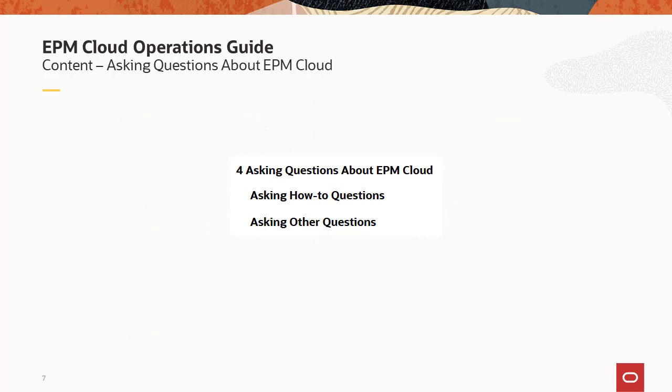The next content in the EPM Cloud Operations Guide is how to ask questions about EPM Cloud. There are two chapters: asking how-to questions and asking other questions. The first covers how to ask 'how do I do something' questions. For both question types and enhancement requests, we sometimes suggest using Customer Connect rather than the SR system — all that information is available in the Operations Guide.